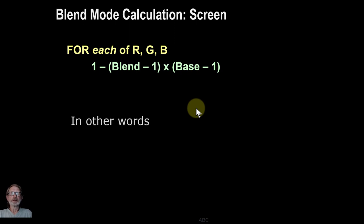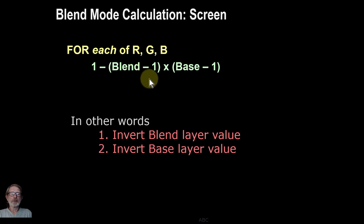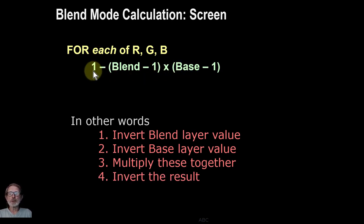But what's this mean? Well, in other words, what it is is first of all you invert the blend layer, then you invert the base layer, then you multiply those two together, and then you invert the result because 1 minus is doing an inversion. Let's do it. Let's try it out if we can actually do that in practice.